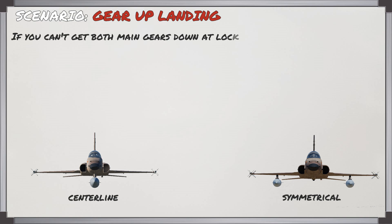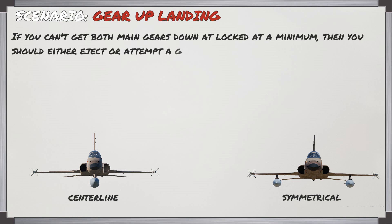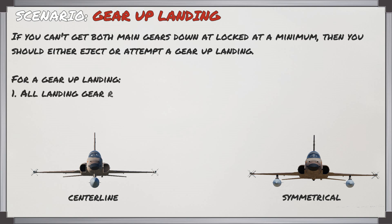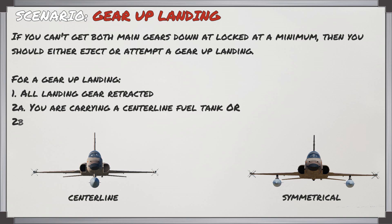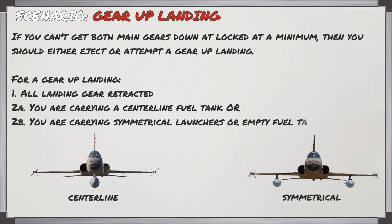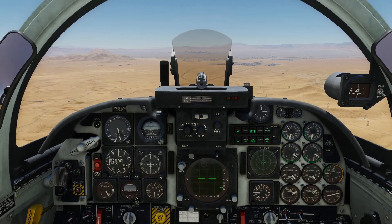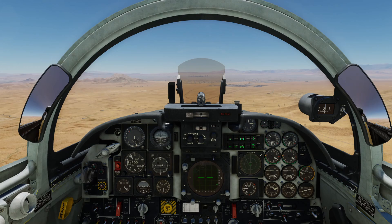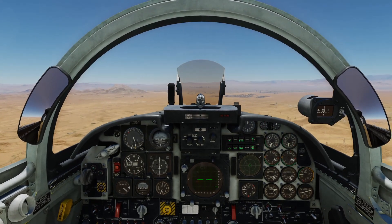If you can't get both main gears down and locked at a minimum, you should either eject or attempt a gear-up landing. If you're going to try a gear-up landing, all the landing gear must be retracted and you have to be carrying either a centerline fuel tank or symmetrical launchers or empty fuel tanks on the wing pylons as shown in the pictures. To demo the gear-up landing, we're not going to do the whole approach - just the differences to make it go a little faster.